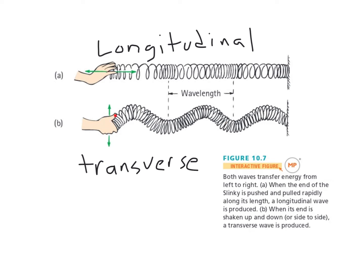When you have a transverse wave, it looks like what we think of as a normal wave, with crests and troughs. A crest to a crest is one wavelength. In the longitudinal wave, when the person pushes to the right the slinky bunches up, and when the person pulls to the left the slinky spreads out. The bunched-up part is called a condensation, and the spread-out part is called a rarefaction.